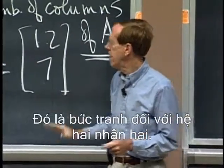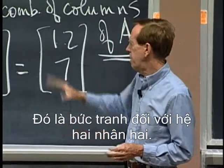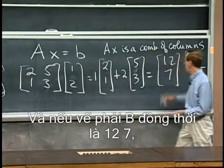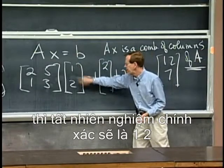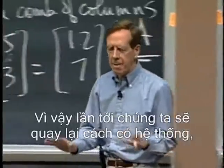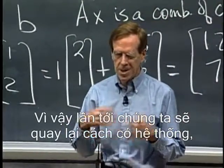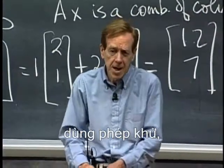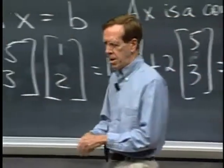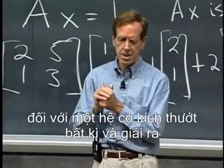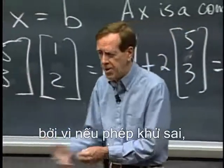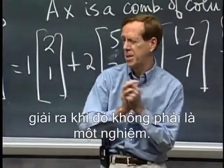So that's the picture for a two-by-two system. If the right-hand side b happened to be twelve, seven, then of course the correct solution would be one, two. Let me come back next time to a systematic way, using elimination, to find the solution — if there is one — to any system of any size, and find out when there isn't a solution because elimination fails.